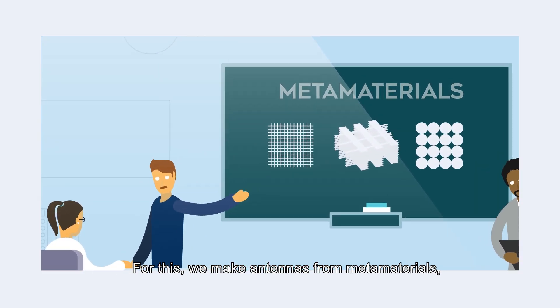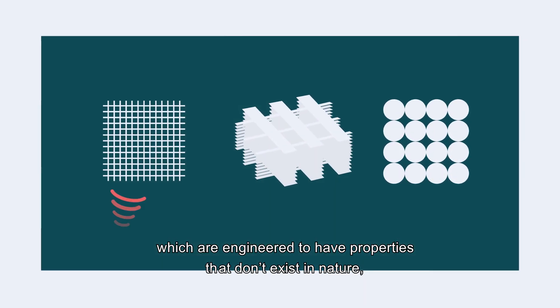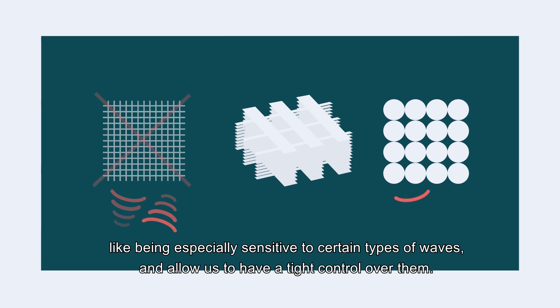For this, we make antennas from metamaterials, which are engineered to have properties that don't exist in nature, like being especially sensitive to certain types of waves, and allow us to have a tight control over them.